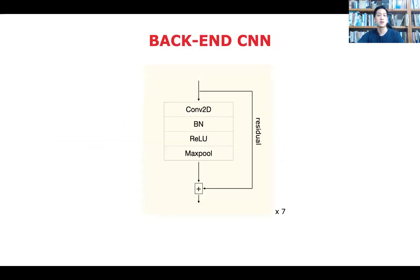The back-end CNN is a simple residual network. Each block consists of a 3 by 3 convolution, batch normalization, rectified linear unit, and max pooling layers. We used 7 convolutional layers for our model.